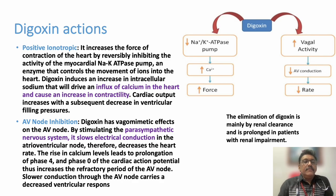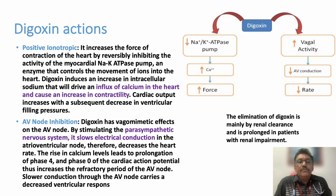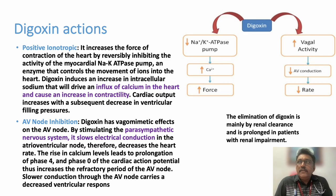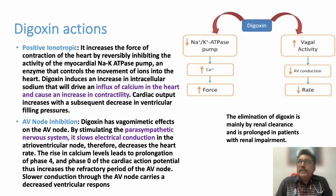Digoxin is a drug used in cardiac failure. Nowadays its use is limited to cardiac failure with atrial fibrillation because of its toxicity. It has two important actions: it increases the calcium content in cardiac cells and increases the force of contraction in cardiac muscles. Once started, patients with cardiac failure slowly see their ejection fraction improve, but unfortunately this drug can produce many arrhythmias.